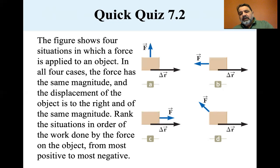So in C, the theta is equal to zero. So the cosine of theta is equal to one. So that's the maximum. You've got a full F times delta R.